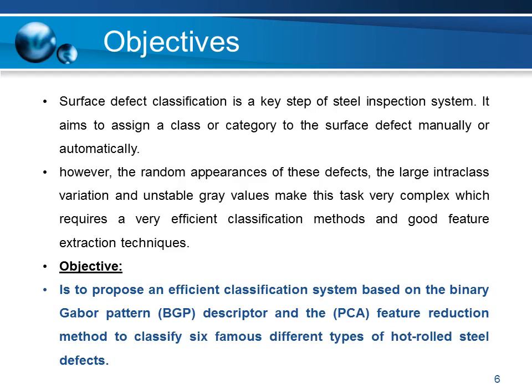Surface defect classification is a key step for steel inspection systems. It aims to assign a class or category to the surface defect manually or automatically. However, the random appearances of those defects, the large intra-class variation, and unstable gray values make this task very complex, which requires very efficient classification methods and good feature extraction techniques.